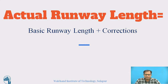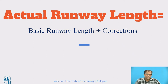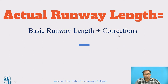We know that the actual runway length is equal to basic runway length plus corrections. So before we apply the corrections — that is elevation correction, temperature correction, and gradient correction — we need to find out what is the basic runway length, and then we apply the corrections. Adding together those corrections of elevation, temperature, and gradient to the basic runway length gives the actual runway length. Today we will cover how to find out the basic runway length.